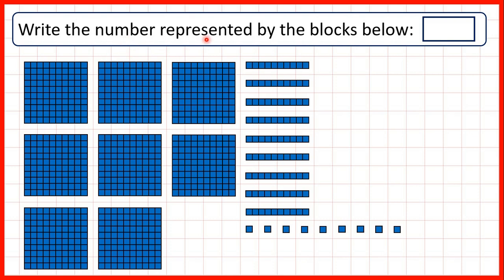To write the number represented by these blocks, we need to count how many of each block we have, starting with our largest blocks — our hundreds. We have eight hundreds, so we write eight as our hundreds digit. We have nine tens blocks, so that's nine as our tens digit, and we have nine ones, so that's nine as our ones digit. So we have the number eight hundred and ninety-nine.